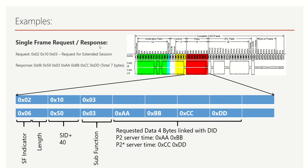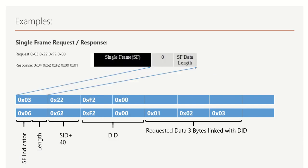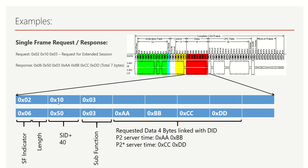This is the message request format — there are three bytes. The first byte is 0x02, the second byte is 0x10, and the third byte is 0x03. Here 0x10 indicates the DiagnosticSessionControl service ID, and 0x03 indicates the extended session, which is the sub-function byte.